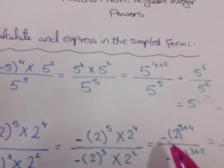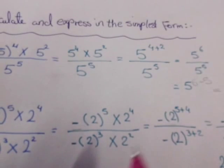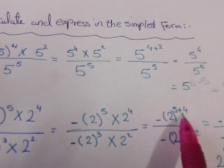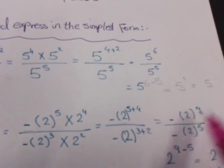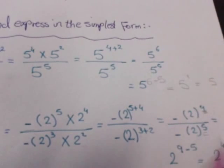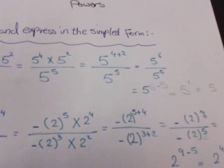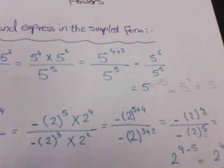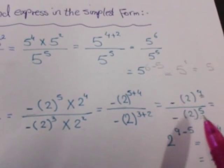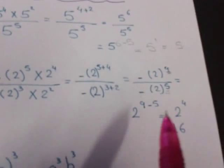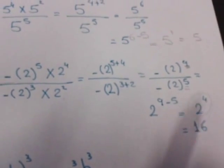Over negative, with two in brackets to the power three, times two power two. I add the powers in multiplication: five plus four equals nine, and three plus two equals five. Negative divided by negative gives a positive sign. Then in division I subtract the powers: nine minus five equals four. So two power four equals sixteen.